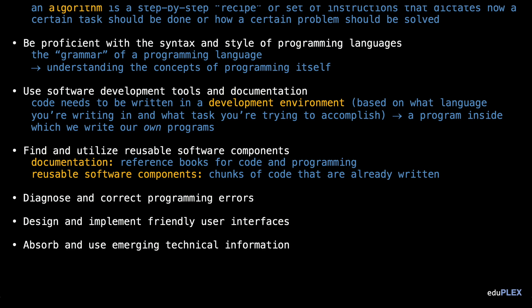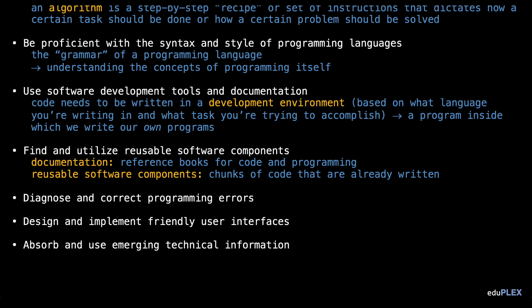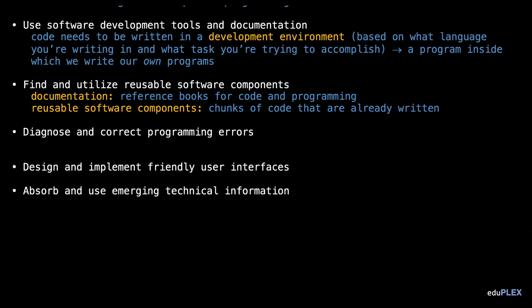Programs never work the first time, and even if it works for a certain amount of time, you might find a bug or your users might report issues later down the road. This brings us to our next point: software engineers also have to be able to debug their code — basically, they have to be able to find and correct any errors in programs.